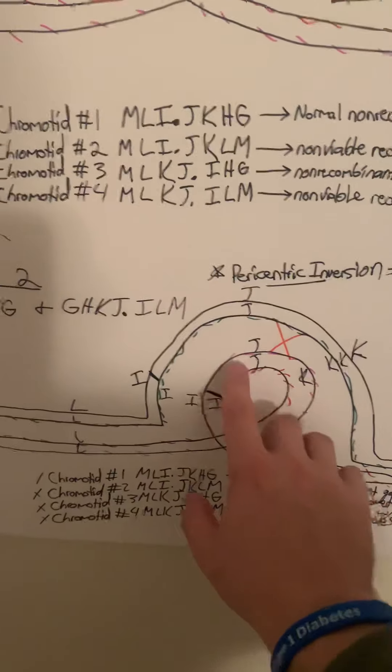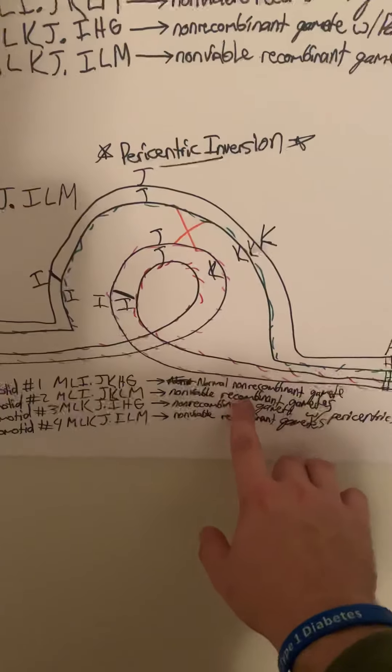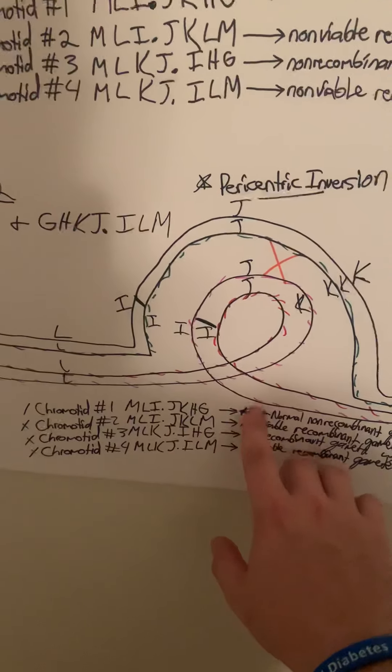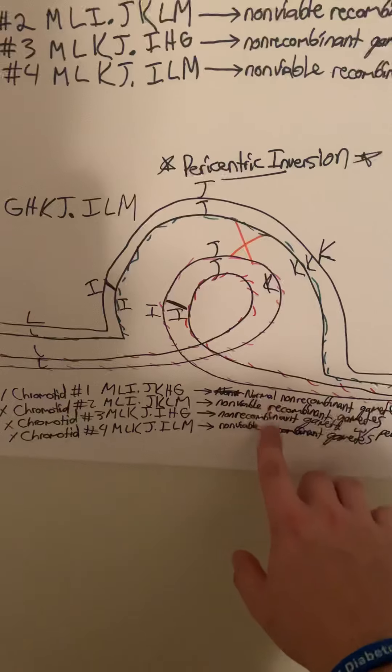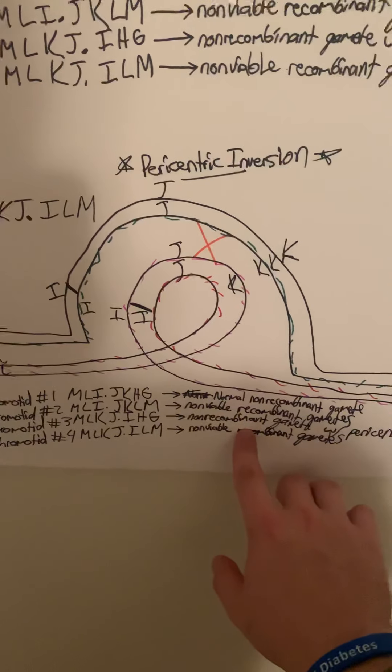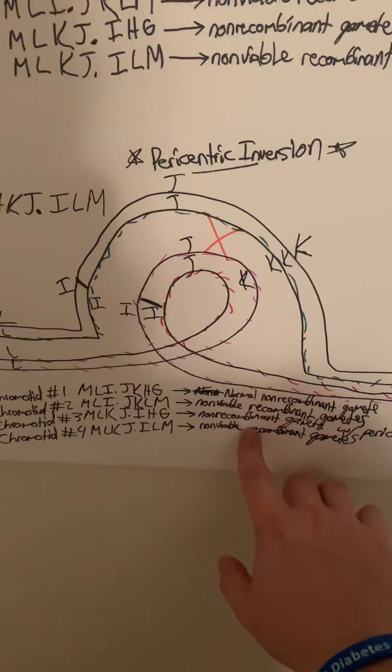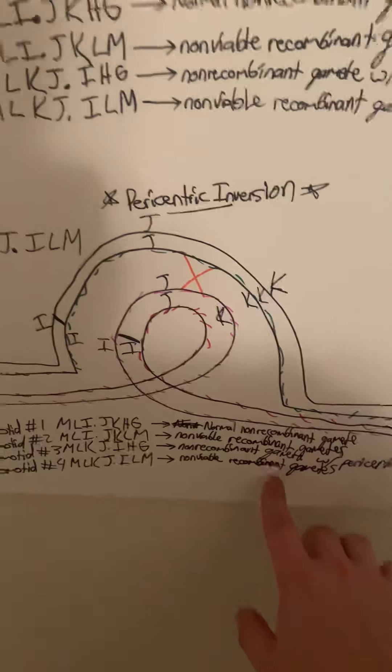So it would be the same as this. It would be the same process in which you would get the exact same results with chromatid 1 and 2 or 1 and 3 being viable, and chromatid 2 and 4 being non-viable.